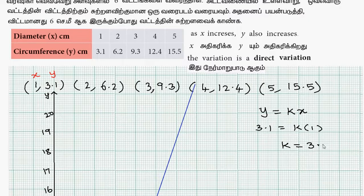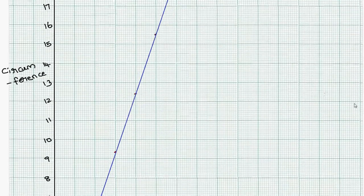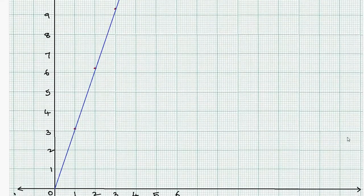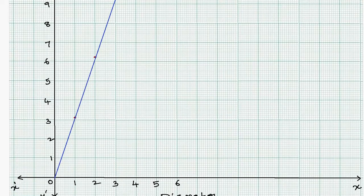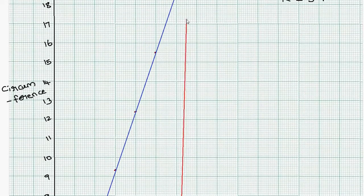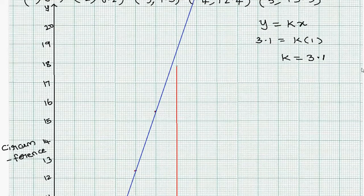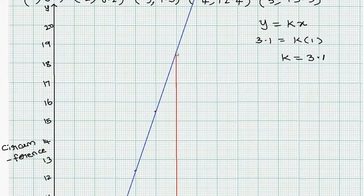The proportion constant k equals 3.1. When diameter is 6, we draw a vertical line from 6. The vertical line will meet the straight line.